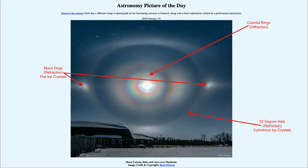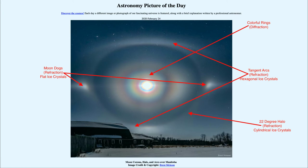Finally, we can see the tangent arcs above and below, again at the 22-degree halo. Those are also caused by ice crystals, but these are hexagonal crystals. Different types of ice crystals give different types of refraction and bend the light differently, giving rise to a number of different effects: the overall 22-degree halo, the moon dogs on either side, and the tangent arcs above and below.